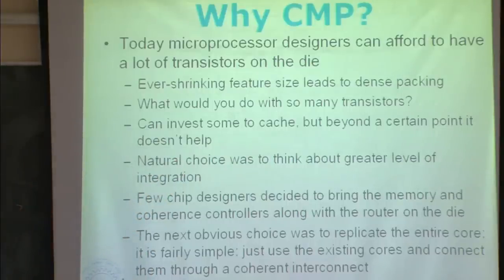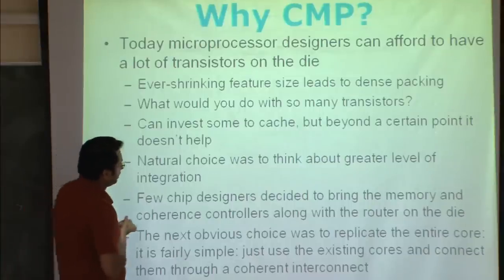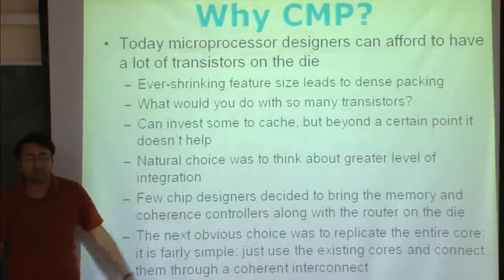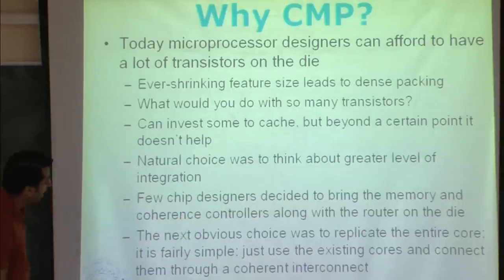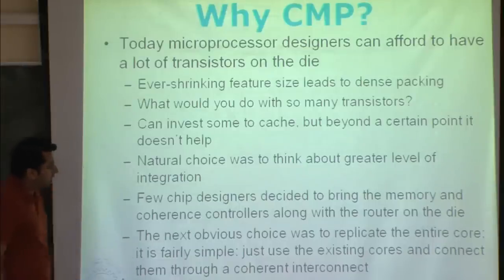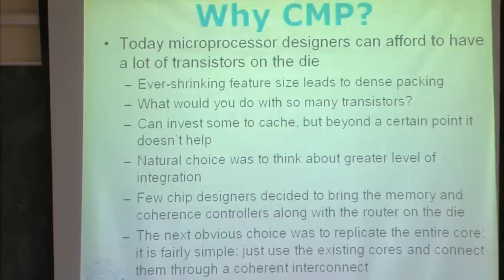For example, Compaq's Alpha 21364 processor had everything on a single chip — memory controller, coherence controller, and router — so you could just put the chip and DRAM cards on the motherboard and you're done. The next obvious choice was to replicate the entire core. You can just use existing cores and connect them through a coherent interconnect. The cornerstone for all these things was Moore's Law — the number of transistors on a die doubles every 18 to 24 months — which means an exponential growth in available transistor count.